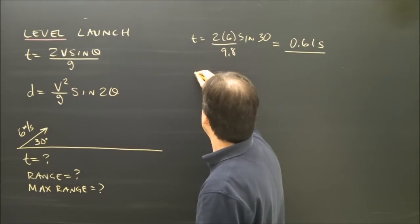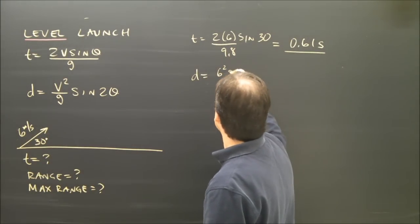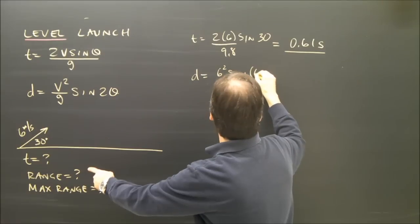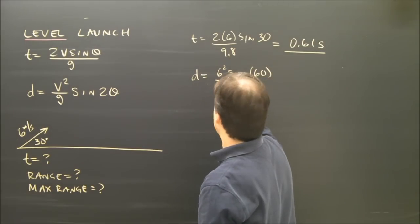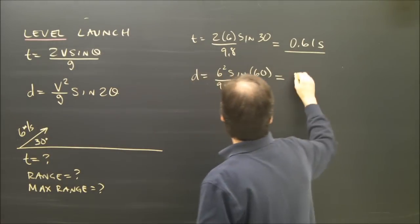How far does it land? The range? D equals 6 squared sine 2 times 30 is 60 degrees divided by 9.8. And that worked out to, I got here, 3.2 meters.